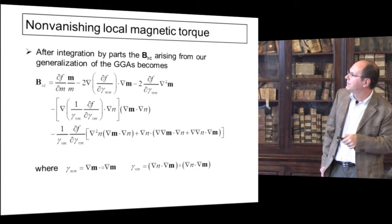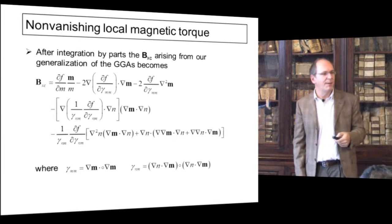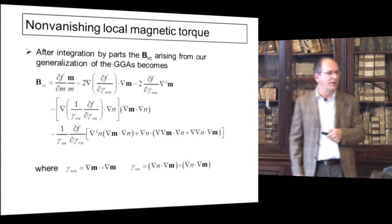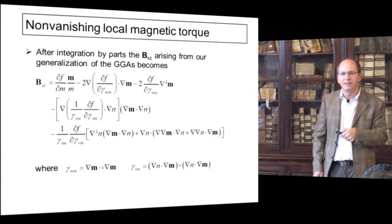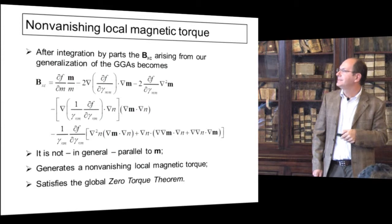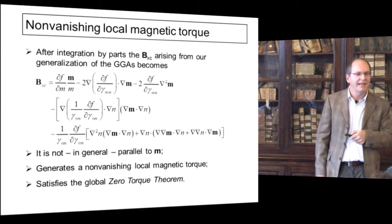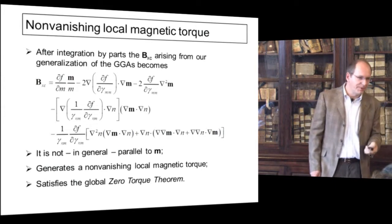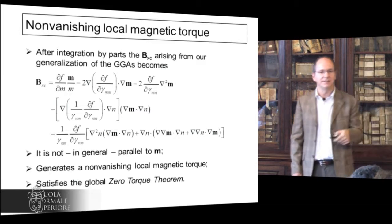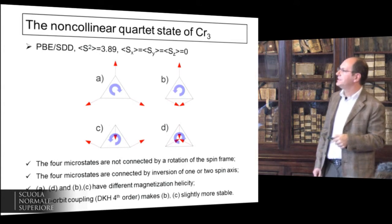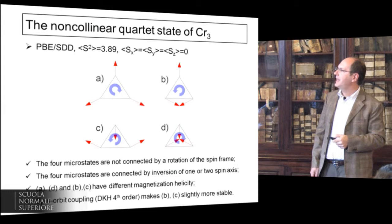This is what the magnetic exchange-correlation field looks like — it's messy, because doing an integration by parts gives you second derivatives of the functional and second derivatives of the variables. You don't need this to compute the energy, but if you want to evaluate the torque you have to go through the exercise of evaluating this mess. Interestingly, this is not in general parallel to M: the LDA part is, but the GGA part is not. So you get a non-vanishing local magnetic torque.